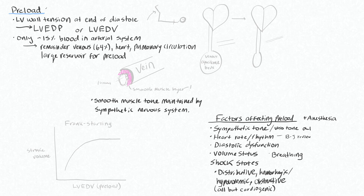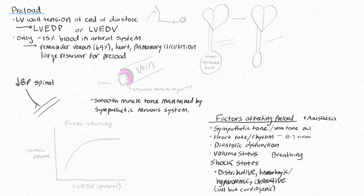With an anesthetic you might get a large drop in your preload basically because the blood is hiding in this large venous reservoir. Veins have a smooth muscle layer, which people seem to forget about, but this is very important for controlling your preload. The tone of this smooth muscle in the veins is controlled by your sympathetic nervous system, and the normal state for them is to be somewhat contracted.